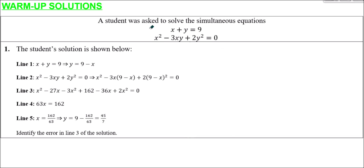Question number one: a student was asked to solve some simultaneous equations. The student attempted it across lines one through five and got some solutions. However, the student made an error on line three. We can zoom in on line three, because this is where we know the error is, and also line two above, to try and spot the error as we go from line two to line three. We can assume line two is pretty watertight, so we don't need to redo all of it ourselves.